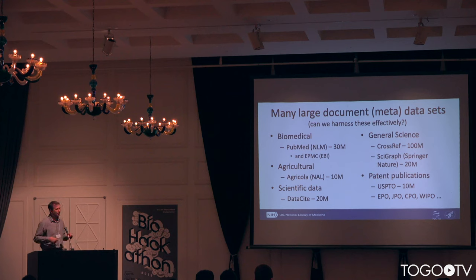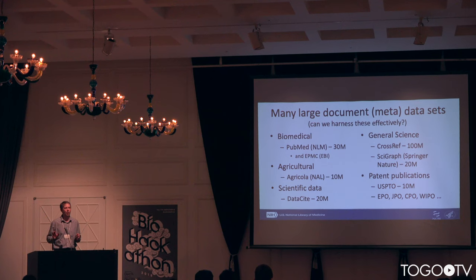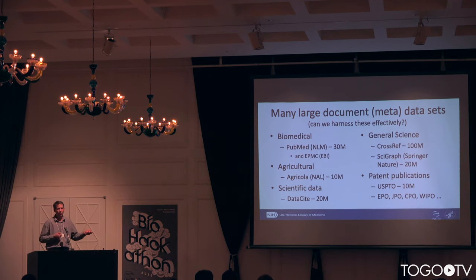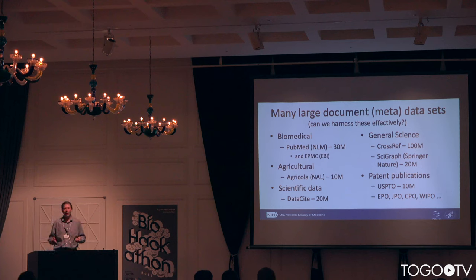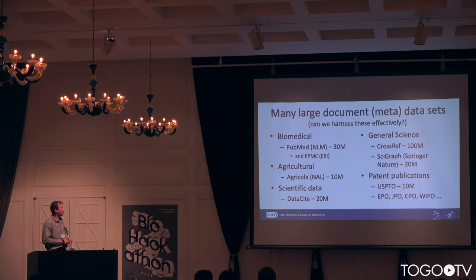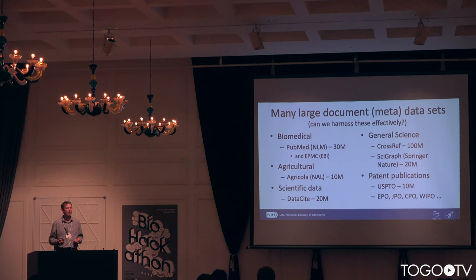We're really at this phase in open information where you have very large collections of open content. When it comes to documents, think about PubMed — you have about 30 million articles, also European PMC. But depending on the types of information you care about, agricultural data, scientific data, general science, there's about 150 million unique identifiers or some form of documents tied to scientific literature that we would care about. There are also tens of millions of patent publications, about 100 million patent documents worldwide that we may want to pull in.